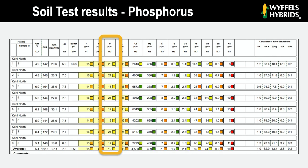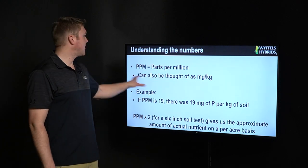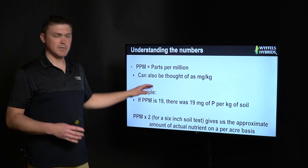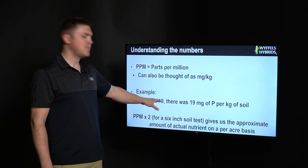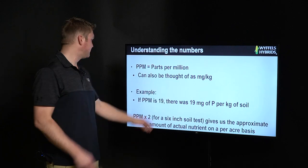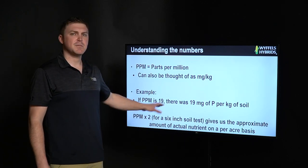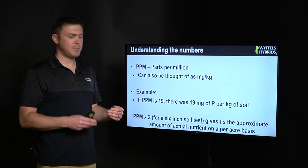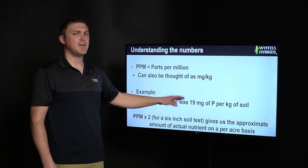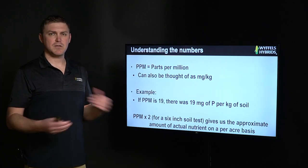Moving on down the line, the next thing I focus on is phosphorus. Going right to the bottom, this particular field has 19 parts per million phosphorus. PPM stands for parts per million, which can also be thought of as milligrams per kilogram. So a PPM of 19 means you have 19 milligrams of actual phosphorus per kilogram of soil that you sent in. Another way to think about this — if you take parts per million times two, assuming you collected that soil test at a six-inch depth, that gives you the approximate amount of available nutrient on a pounds of nutrient per acre basis.